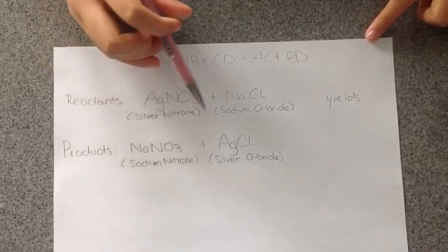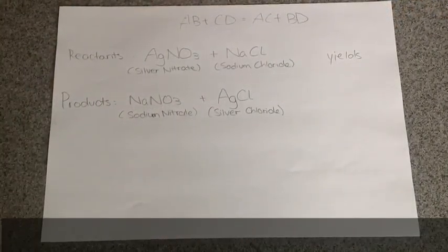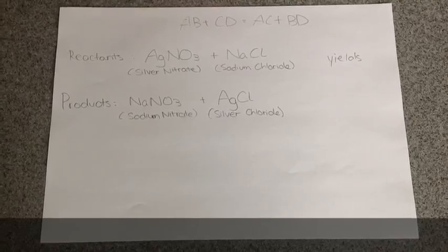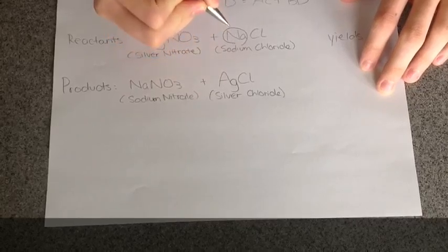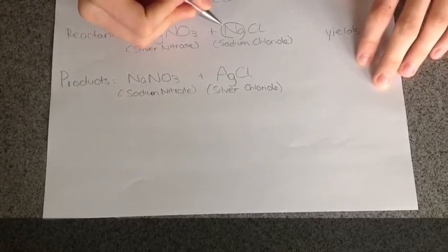sodium nitrate and silver chloride. Since sodium has a stronger attraction to nitrate than silver does, sodium is able to kick out silver and bond with nitrate.